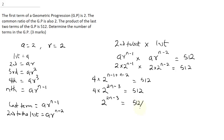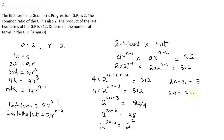From here, 2 to the power 2N minus 3 equals 512 divided by 4, which is 128. Now 128 is 2 to the power 7. Having established that, we have an indicial equation with the same bases, so we take the indices: 2N minus 3 equals 7. Collecting like terms: 2N equals 3 plus 7, so 2N equals 10, and therefore N equals 10 over 2, which gives N equals 5. This is the final answer.